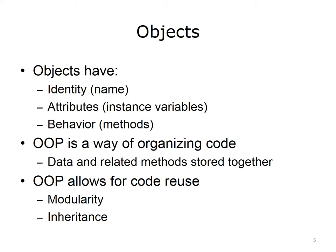OOP is just one of many programming paradigms. It is one way of expressing a program for a given problem, but it is certainly not the only way. It is helpful to think of OOP as a way of organizing a program so that the data and related methods are stored together. This allows for code reuse, both because it is modular, but also because it allows for something called inheritance. Inheritance means that objects or classes inherit data and or methods from other classes, which allows for less code redundancy.